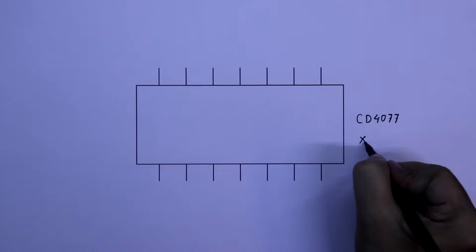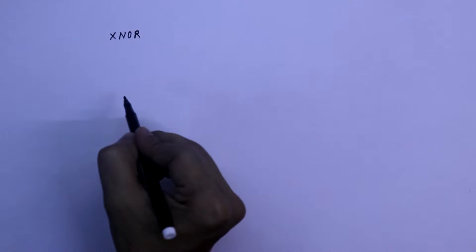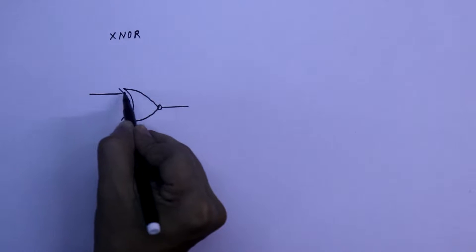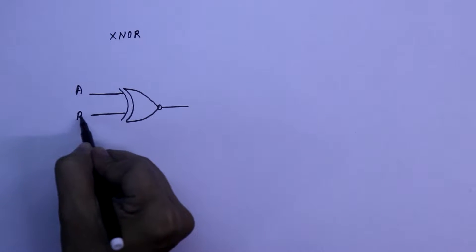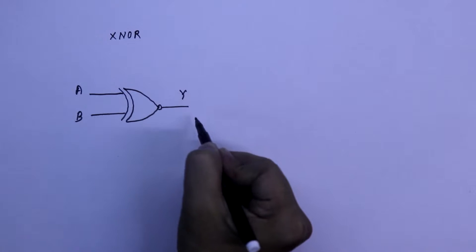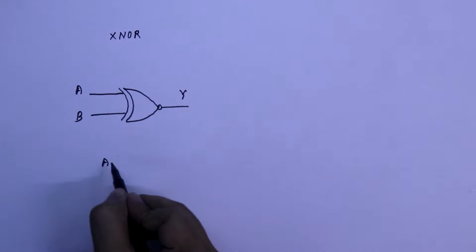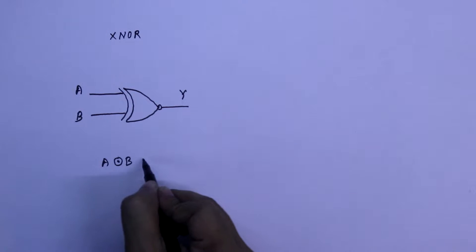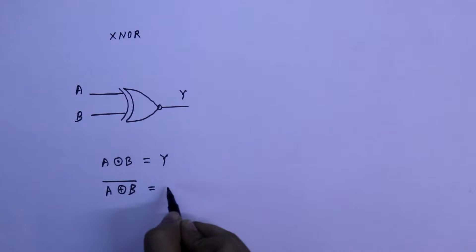CD4077, it is a XNOR IC. This is the symbol of XNOR. It will have 2 inputs A and B, and the output will be Y. We can write it as A XNOR B equal to Y, or you can write it A XOR B whole bar equal to Y.